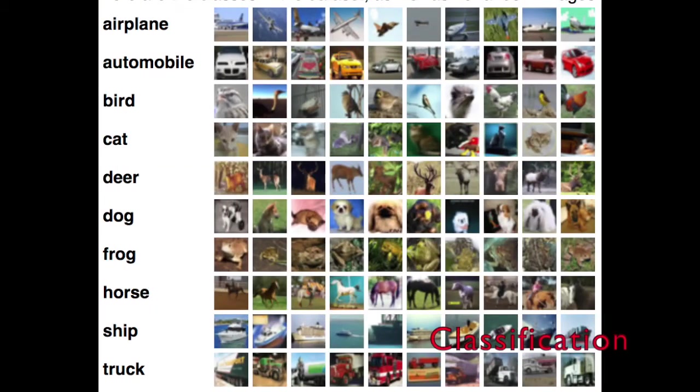The most popular problem of computer vision is classification. The definition of this problem is very straightforward. We have an input image, either RGB or grayscale, and we are trying to determine the type of the single object shown in the image. Since this problem has existed for many years, there have been many methods proposed. I'm going to introduce three of them.